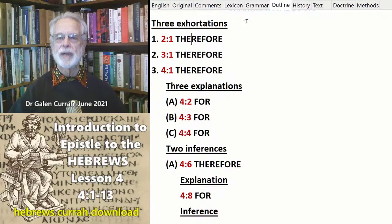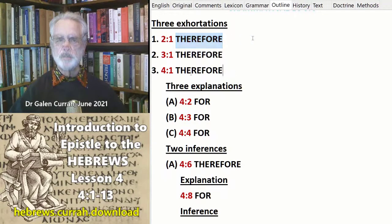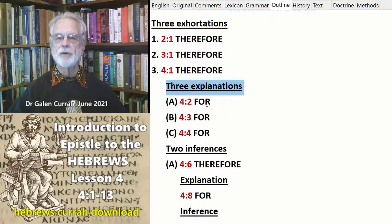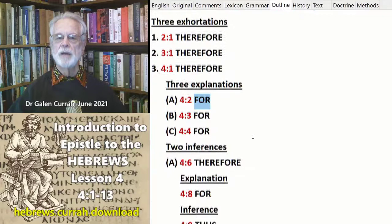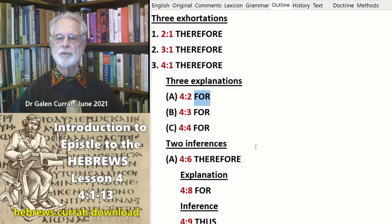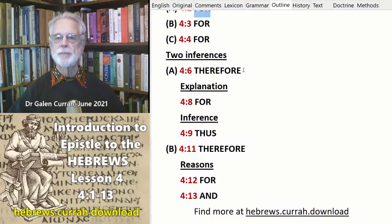There are three great exhortations found in chapters 2, 3, and 4, each of which is introduced with the connector 'therefore.' In chapter 4, the exhortation is followed immediately by three explanations in verses 2, 3, and 4, each introduced by the connector 'for.' Then two inferences are drawn from verse 1, each again introduced by 'therefore.' Verse 6 is followed by an explanation with the word 'for,' and its own inference beginning with 'thus' or 'therefore.'